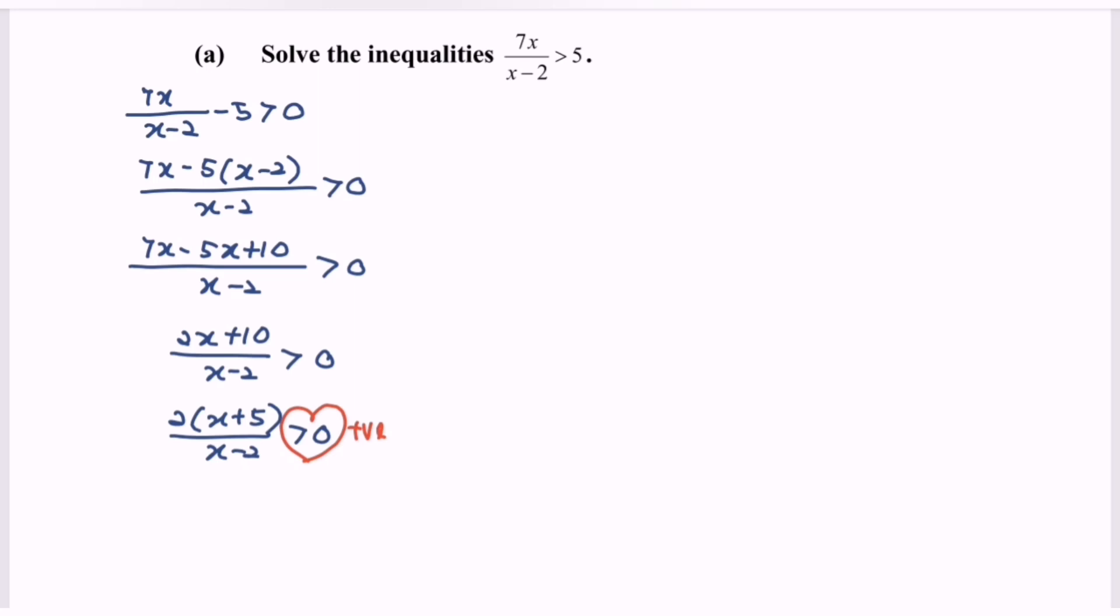Next, what we have to do is split the situation and remember, always assume positive. So meaning that x plus 5 greater than 0, x minus 2 greater than 0. Therefore, x greater than negative 5, x greater than 2.